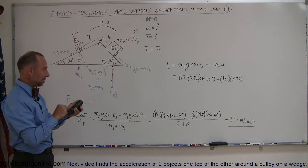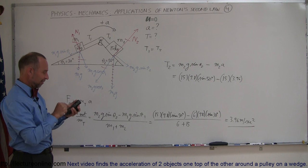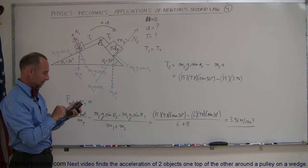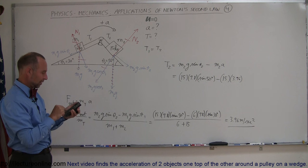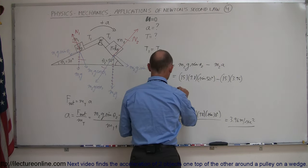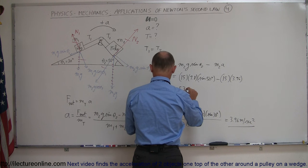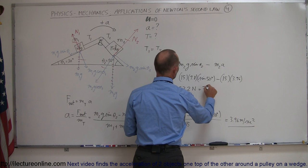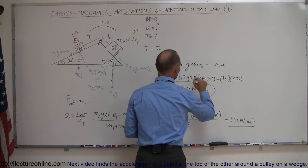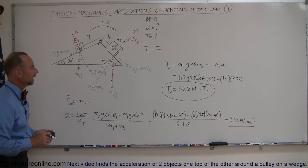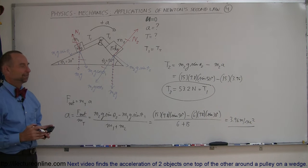15 times 9.8 times the sine of 50 minus 15 times 3.96 equals, that's better. So the tension in the string would be 53.2 newtons, and of course that would also be the same for tension one since it's a single string with a massless frictionless pulley in between. That's how you do a problem like that.